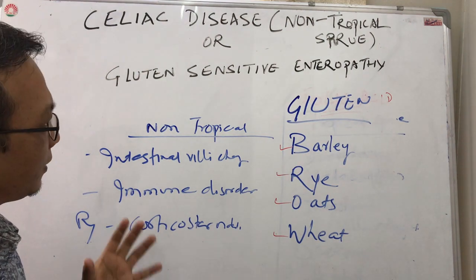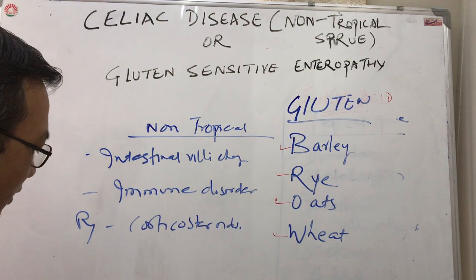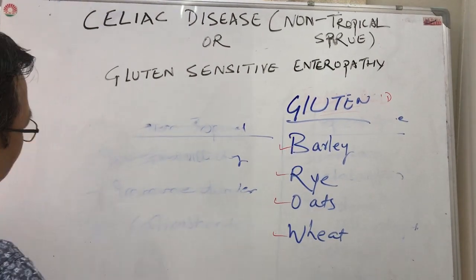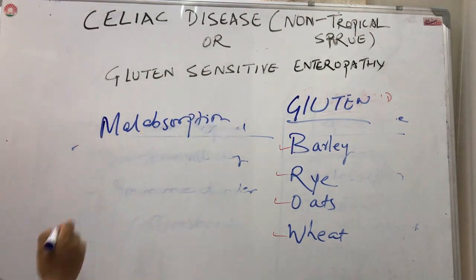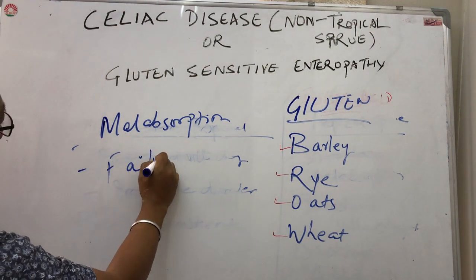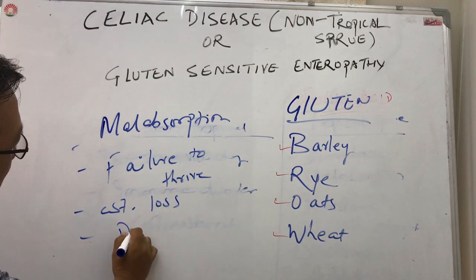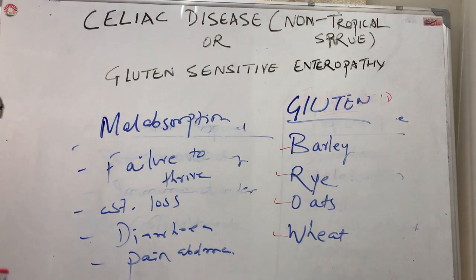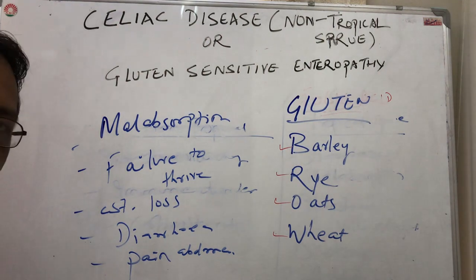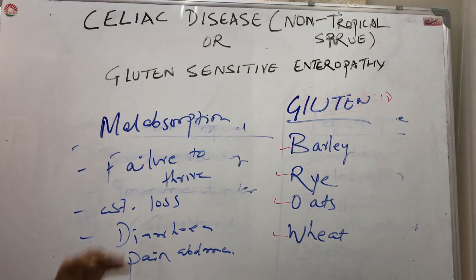However, recently celiac disease is not always showing these classical symptoms of malabsorption, failure to thrive, weight loss, diarrhea, and pain in the abdomen. It has been seen that only a smaller percentage of the population shows classical signs. Around 50% of celiac disease patients show atypical signs and symptoms.